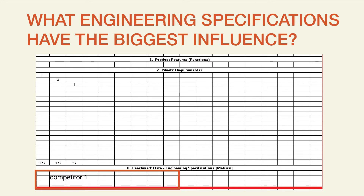So for example, let's say that we're trying to create a certain amount of horsepower. We know that angular velocity and torque are two parameters that would be of interest to us in looking at our competitors' products.